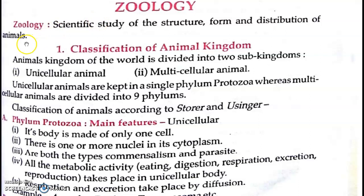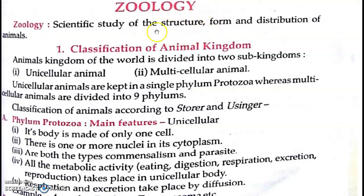What is zoology basically? Zoology is the scientific study of structure, form, and distribution of animals. We look at the structure of any living organism, basically its scientific study, its form, morphology, and its shape.